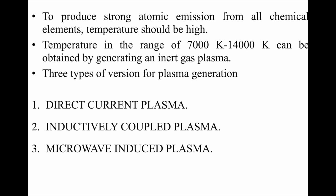To produce strong atomic emission from all chemical elements, temperature must be very high. Temperatures in the range of 7000 to 14000 Kelvin can be obtained by generating an inert gas plasma. There are three versions of plasma generation: direct current plasma, inductively coupled plasma, and microwave induced plasma.